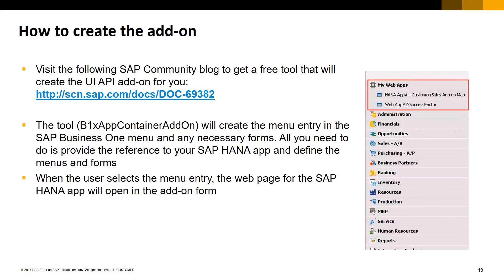Please check the blog for detailed information on this tool as well as to download it. The blog explains three options: number one, to use the add-on already pre-packaged and just configure it with no compilation required; option two, to recompile the add-on after having customized it; and option three, to create your own add-on. Please note that the B1X app container add-on tool and its source code are provided by SAP under SAP community as-is license agreement. No official support is provided by SAP.